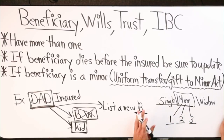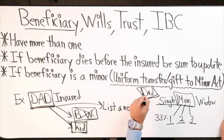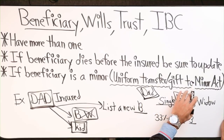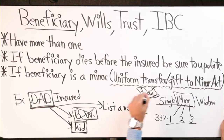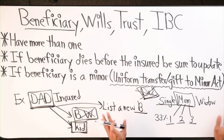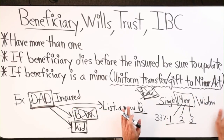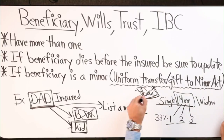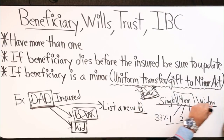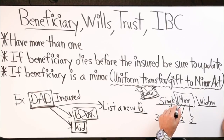All three kids are listed as beneficiaries — you figure a third, a third, a third. Or let's say dad was also a beneficiary, you're the insured, and dad passes away. Maybe you didn't know to update your beneficiary — it just didn't cross your mind. Dad didn't have a life insurance policy, and now you're a widow with your children listed as beneficiaries.